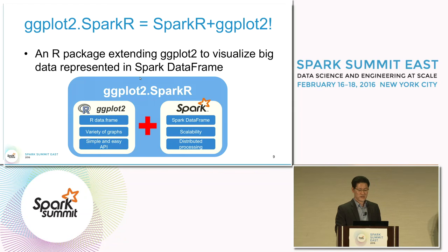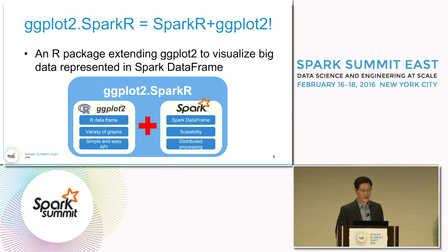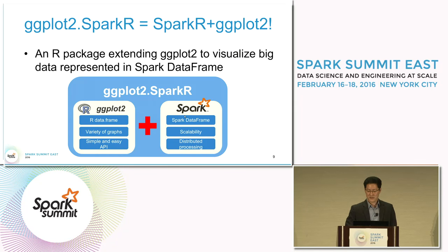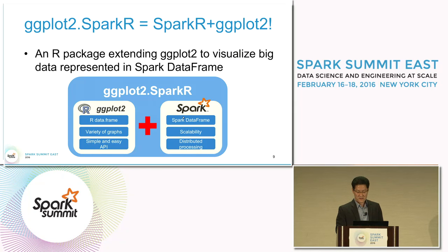Just like ggplot2, it supports a variety of graphs with simple and easy APIs. Just like Spark, it supports scalable and distributed processing. Among other features, it can support Spark data frames as well as R data frames—this is the key thing.